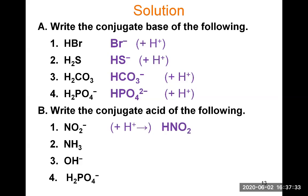For NH3, let's find the conjugate acid of ammonia by adding an H+. This is an exception — you do not add the H as first in the formula. Ammonia becomes the ammonium ion where you have NH4, adding the H to the list of hydrogens already there. The H+ shows up as a positive charge, so NH3 has NH4+ as its conjugate acid.